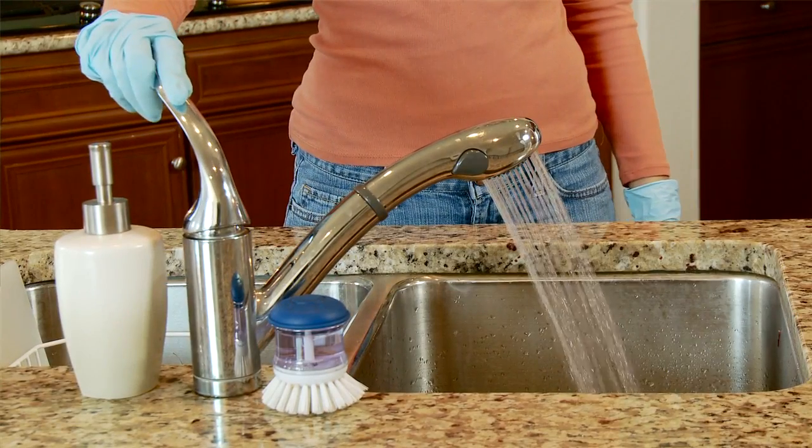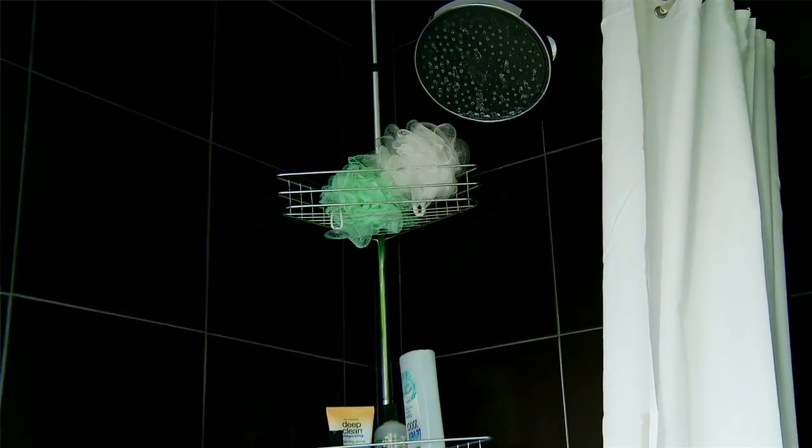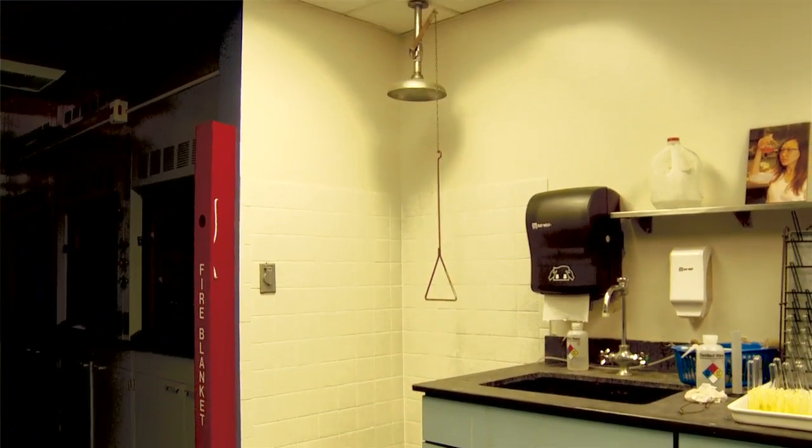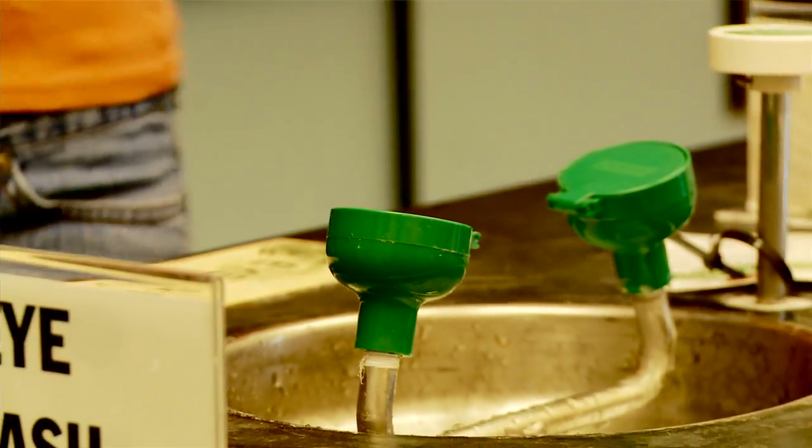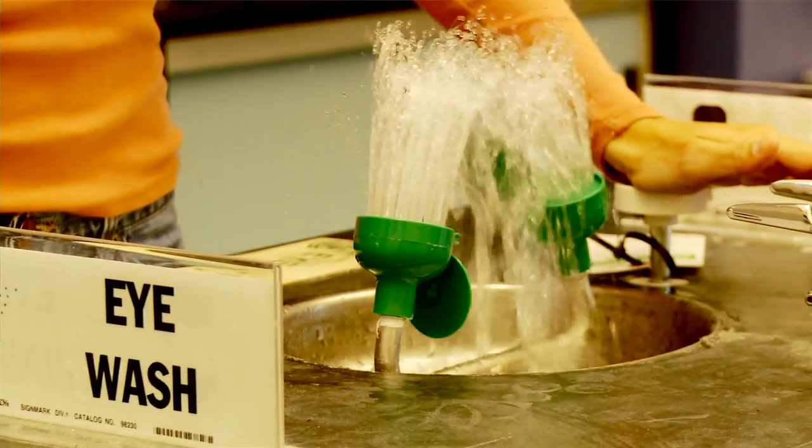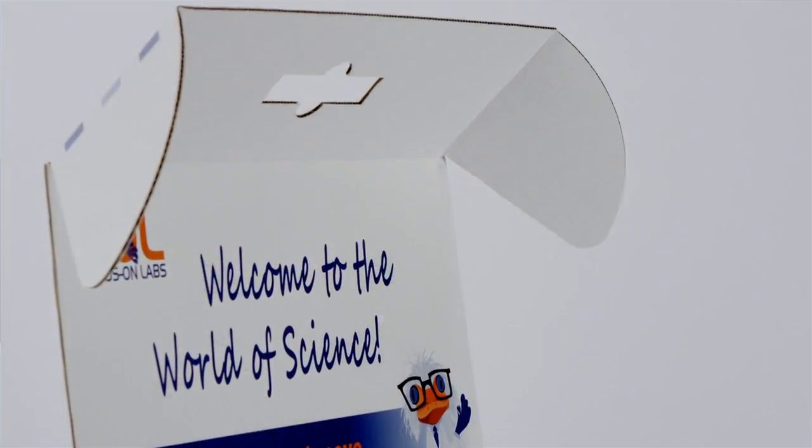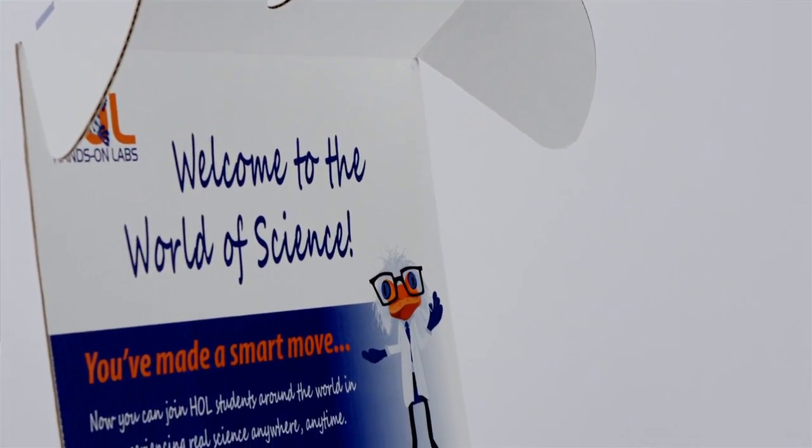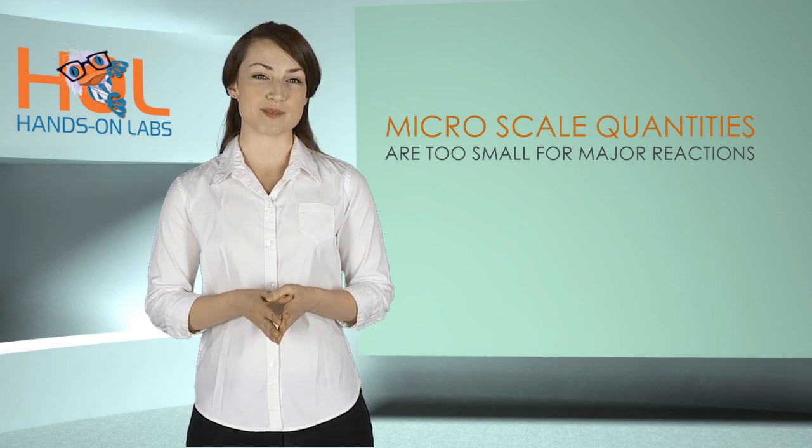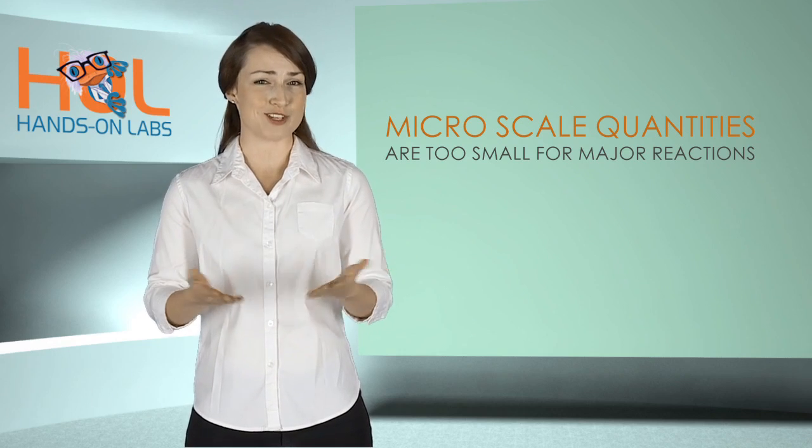Have some water available, either a sink, bottled water, or a bathroom shower nearby. In a campus lab, you'll find the safety shower and eye wash stations should you ever splash or spill chemicals on yourself or a fire starts. This is highly unlikely to happen since the micro scale quantities provided are too small for major reactions.